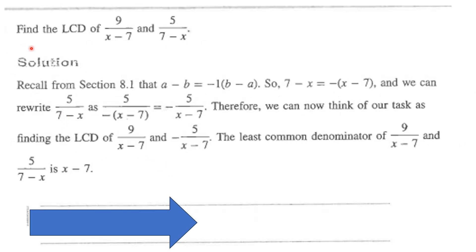Let's do one more example — this one is a little tricky. We want to find the least common denominator of 9 over x minus 7 and 5 over 7 minus x. Recall that a minus b is the same as negative 1 times b minus a. So in this case, 7 minus x equals negative x minus 7. You can see that the least common denominator here is x minus 7.